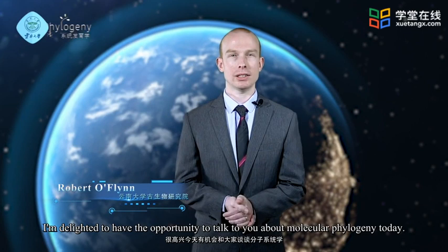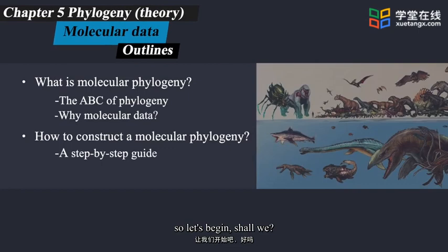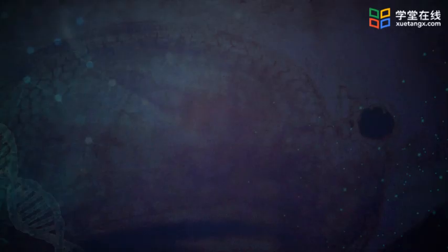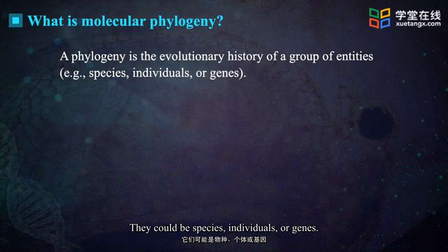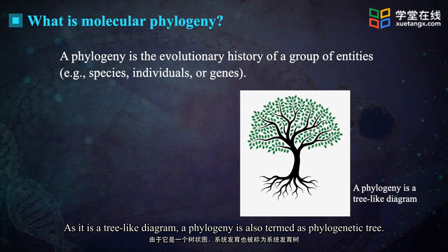Hi, welcome back. I'm delighted to have the opportunity to talk to you about molecular phylogeny today, so let's begin. What is a phylogeny? A phylogeny is the evolutionary history of a group of entities. They could be species, individuals, or genes. As it is a tree-like diagram, a phylogeny is also termed a phylogenetic tree.